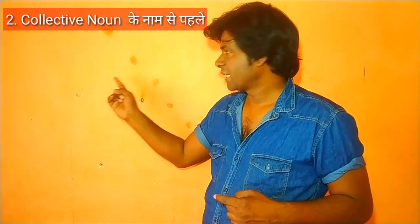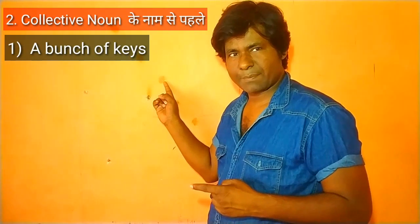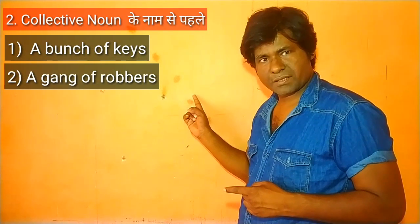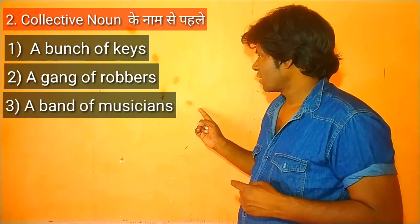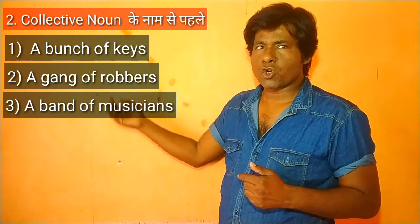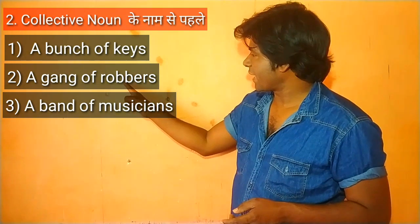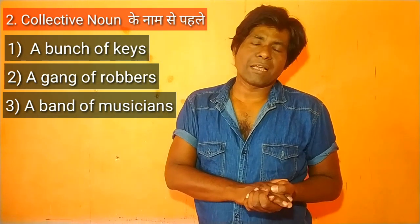Number 2 mein dekhte hain — collective noun. Jaise: 'a bunch of keys', 'a gang of rowers', 'a band of musicians'. Yeh woh noun hai jo samuha ka bodh karaate hain. Isliye collective noun ke pehle bhi hum 'a' aur 'an' ka prayog karte hain.